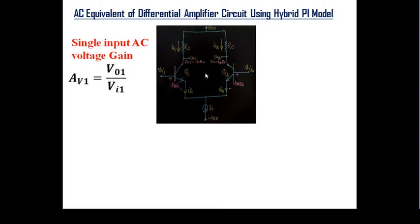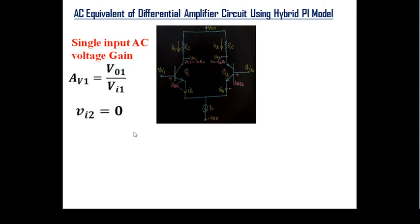To draw the hybrid pi model for transistors Q1 and Q2, we keep the DC supply voltage grounded and replace the ideal current source with an open circuit. For the single-ended case, VI2 equals zero.